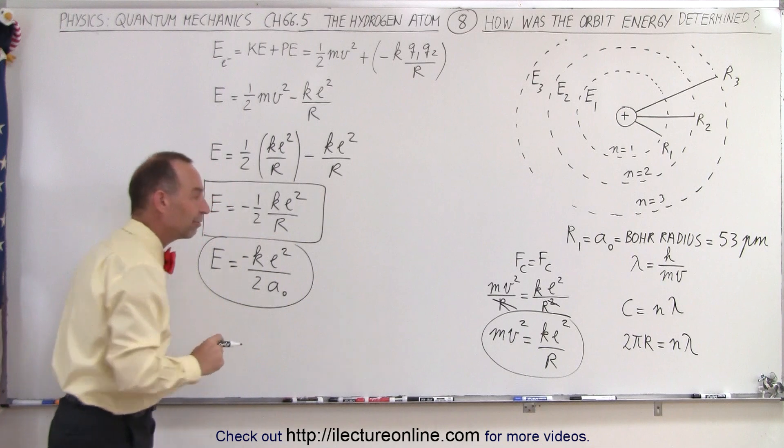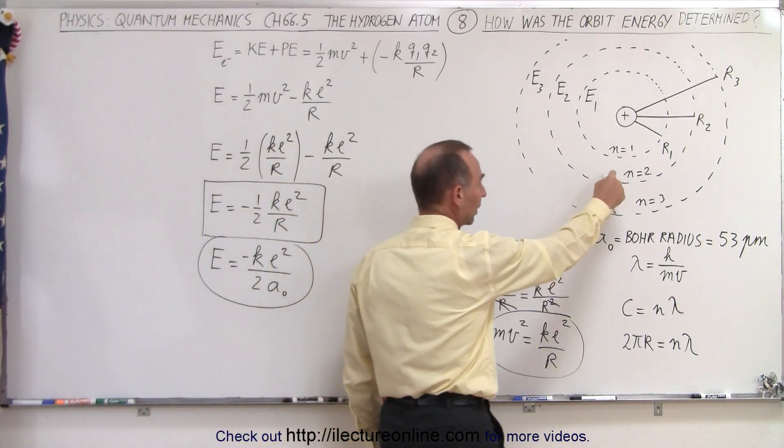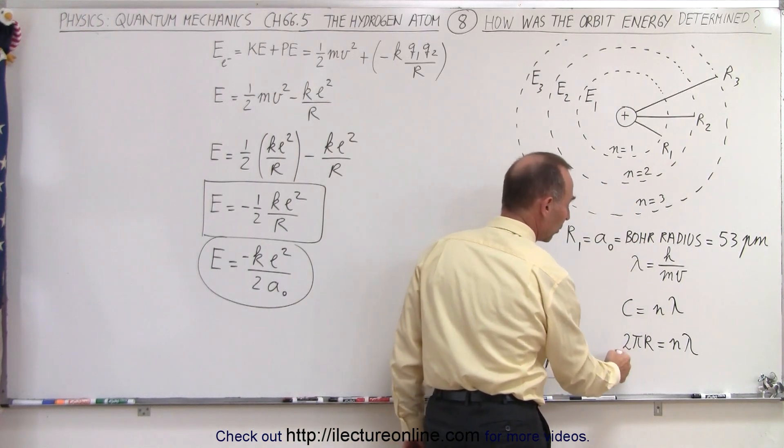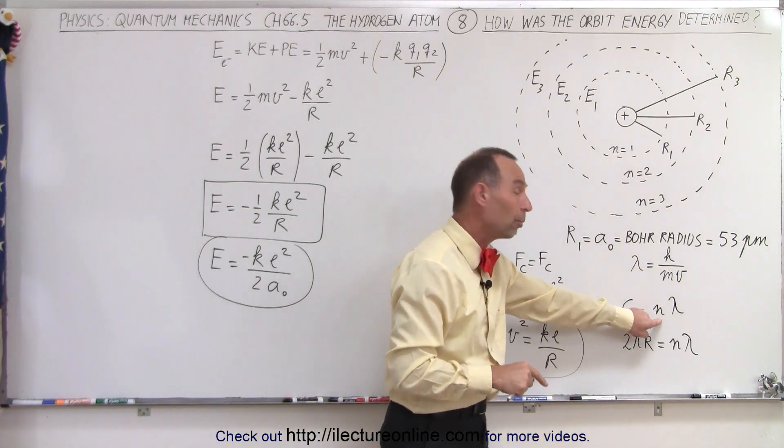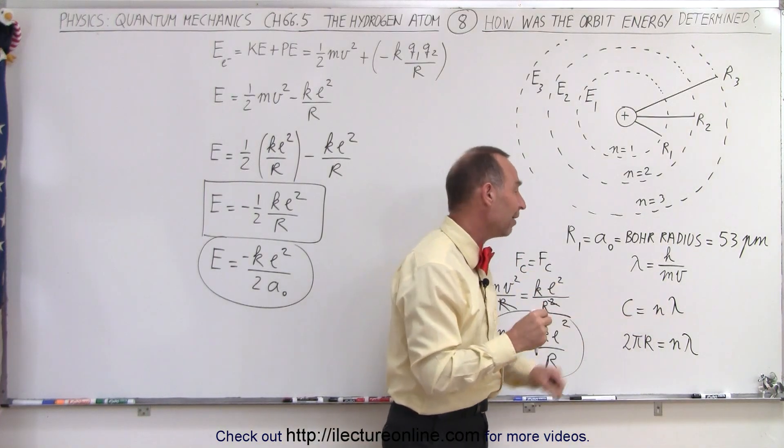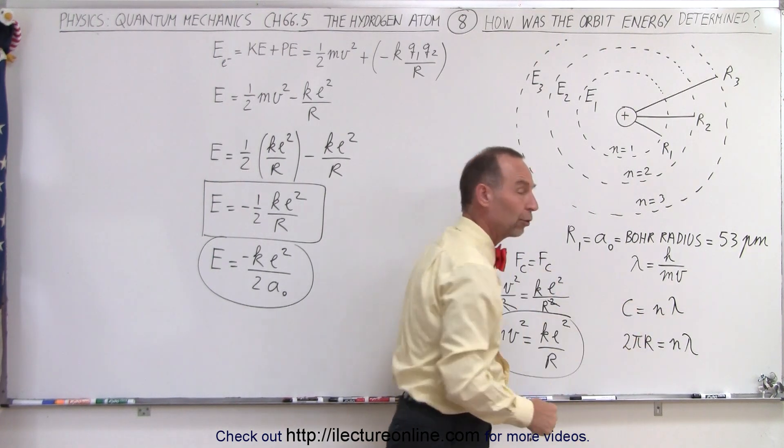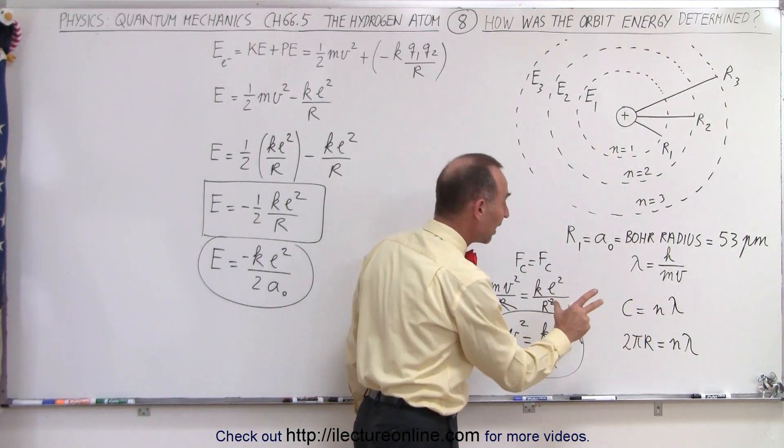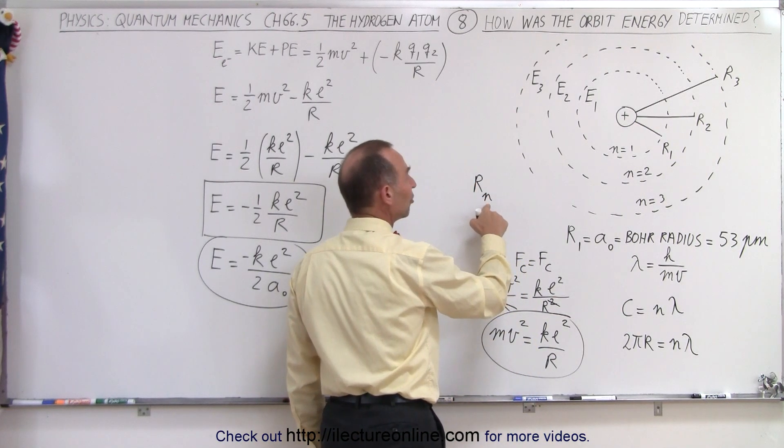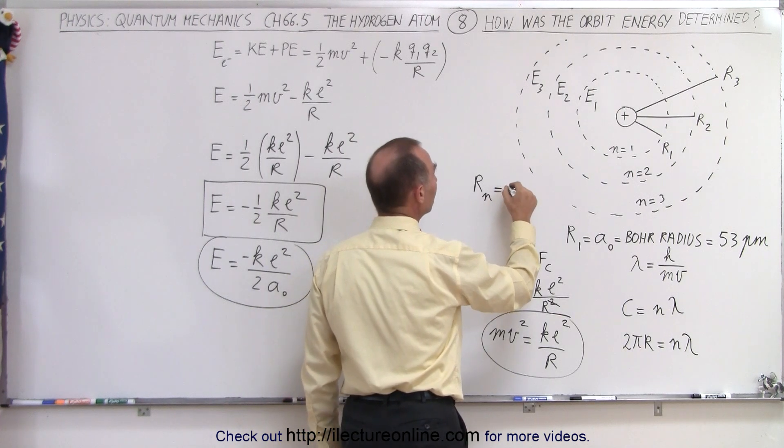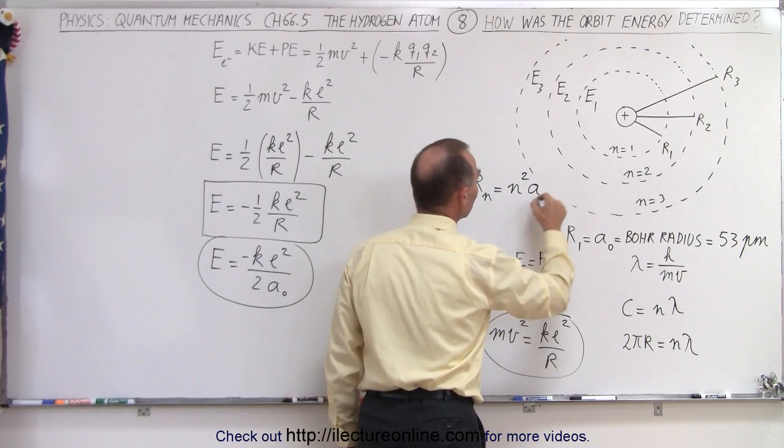Now, we realize that for orbits that are further out, for the second orbit and third orbit, when n becomes 2, n becomes 3, we can see that there's a relationship here between the circumference of the orbit and the number of wavelengths the electron must have. One wavelength for the first orbit, two wavelengths for the second, three wavelengths for the third, and so forth. So because of that, we then know that the radius, depending upon what energy level we're in, is going to be equal to the integer number n² times a₀.